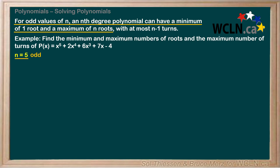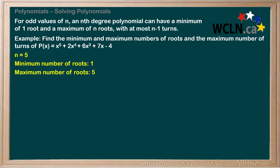So in this example, since n is 5, an odd number, the minimum number of roots is 1 and the maximum number of roots is 5. We also know that our odd degree polynomial can have at most n minus 1 turns, where n is 5. Since 5 minus 1 is 4, the maximum number of turns is 4.